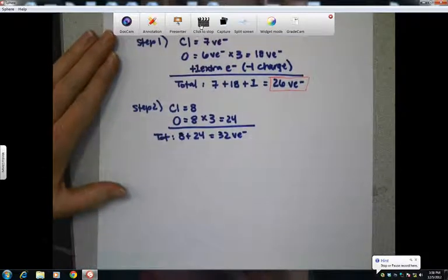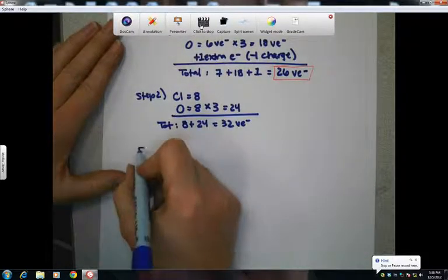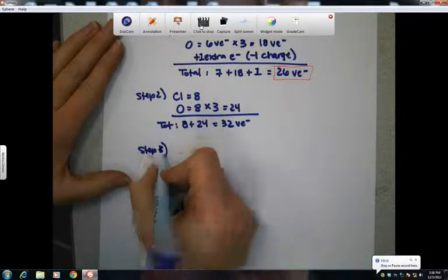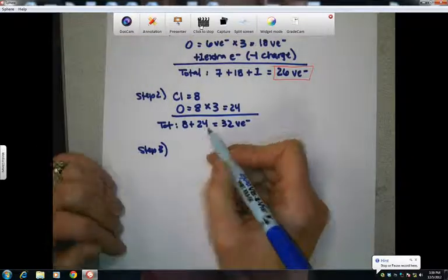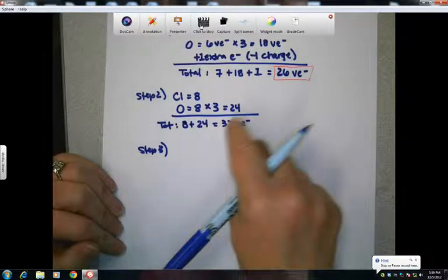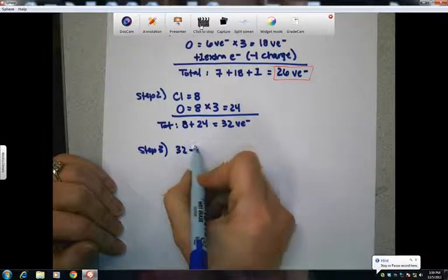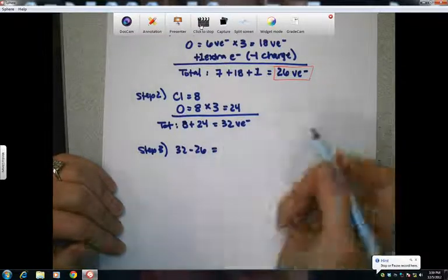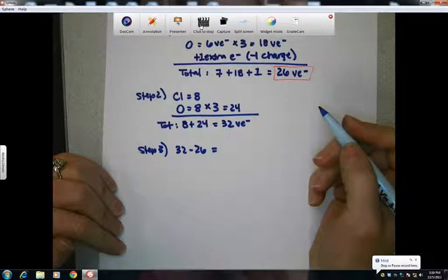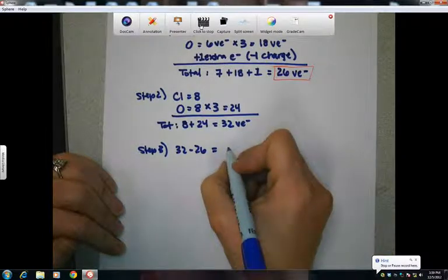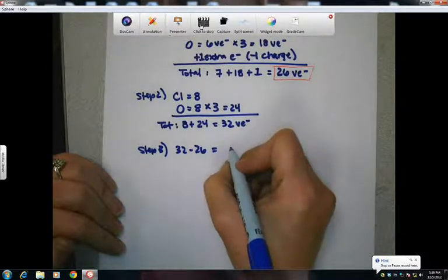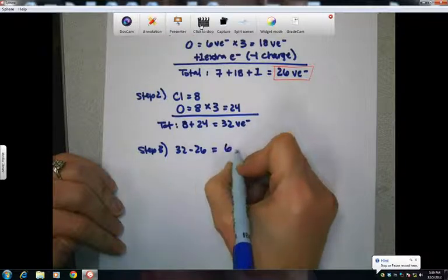So step number three. Step three, we're going to go ahead and subtract the 26 from our 32. So 32 minus 26. And that should leave us with six electrons. So, yep, six valence electrons. So these, again, are going to be your bonded electrons or your bonding electrons.